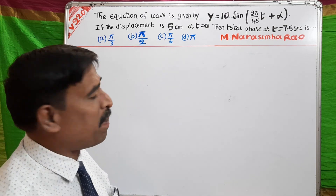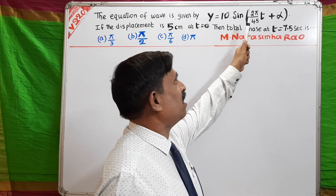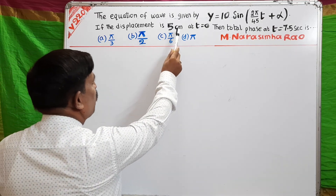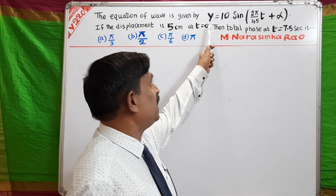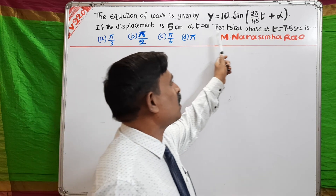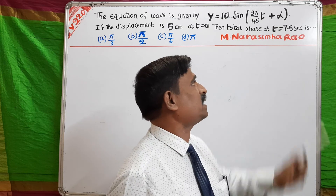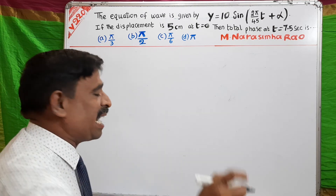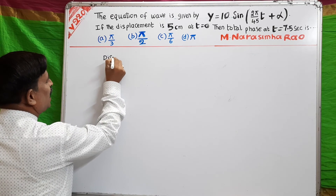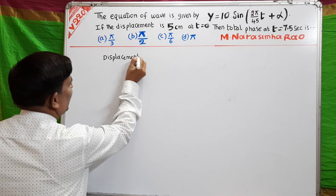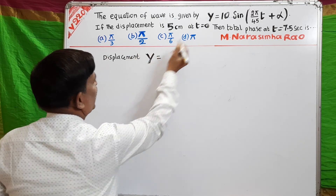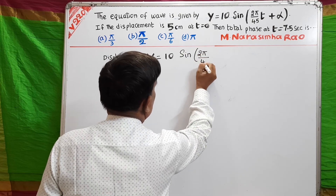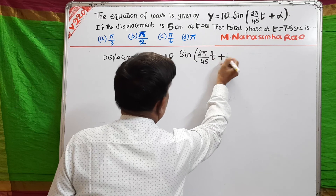The equation of a wave is given by y = 10 sin(2π/45 · t + α). If the displacement is 5 cm when time t = 0, the total phase at t = 7.5 seconds is to be found. They have given the displacement equation: y = 10 sin(2π/45 · t + α).